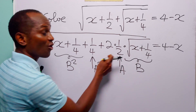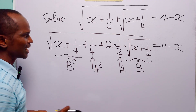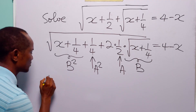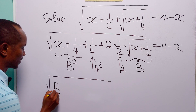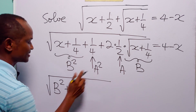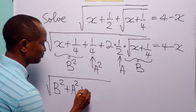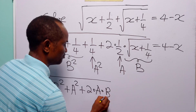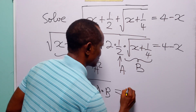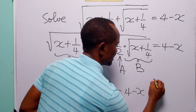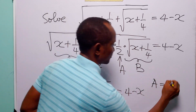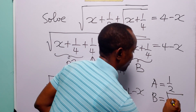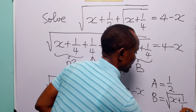In the same way, if we call one-half a, then 1/4 is going to be equal to a squared, because the square of one-half is 1/4. So that means that on the left-hand side of this equation we have something that looks like the square root of b squared plus a squared plus 2 times a times b, and this is equal to 4 minus x, where a is equal to one-half and b is equal to the square root of x plus 1/4.